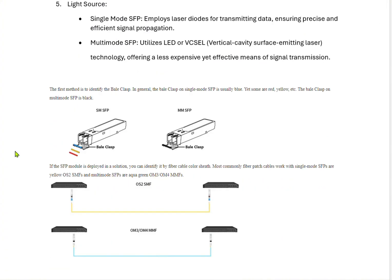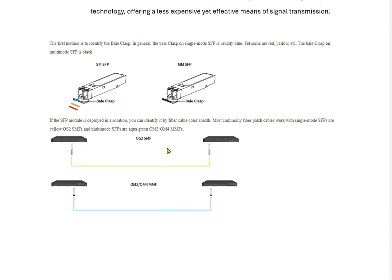How to identify SFPs physically: single mode SFPs have a bail that comes in red, yellow, or blue color, whereas multi mode SFPs come with a black color bail. This shows a normal connectivity from switch to switch using OS2 single mode fiber. The aqua color cable indicates it is a multi mode OM3 or OM4 cable.